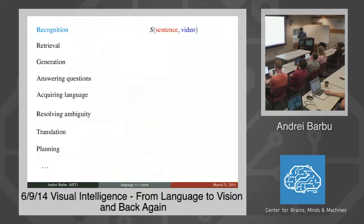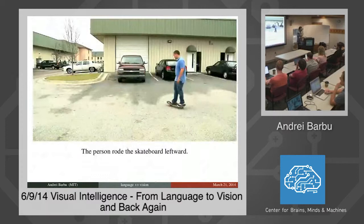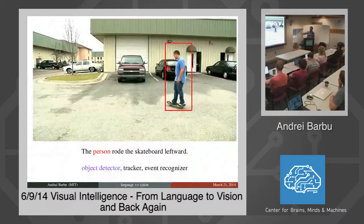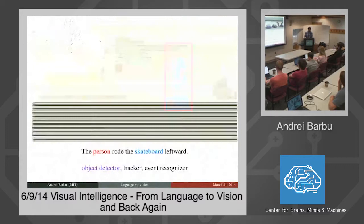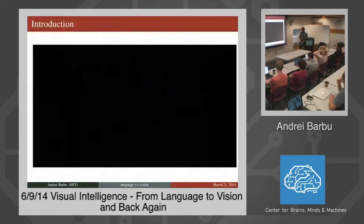We're going to build this scoring function from a few simple widgets, part by part. If I show you a video and give you a sentence like 'the person who rode the skateboard leftward', what do you have to do to tell me if this sentence is true or false? At least in principle, you have to detect the objects — a person and a skateboard — track them over time to determine their relationship, and then look at those relationships over time to say this person was riding a skateboard.